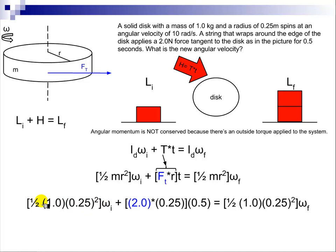So we have all the values on the left, all the values there, and then all we have to do is solve for this final angular velocity. And the initial angular velocity is 10, I just forgot to put it in. So that's how we usually go about solving this problem.